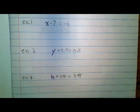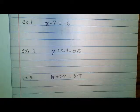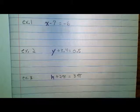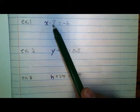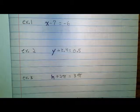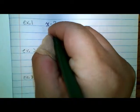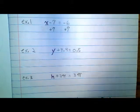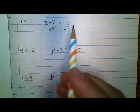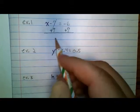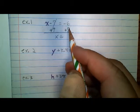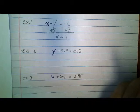Our first example: x minus 7 equals negative 6. I did x in a different color because I want it to stand out — we're solving for x, trying to get x by itself. The first thing to ask is: what is happening to the variable? We have x minus 7, so we recognize subtraction. The inverse of subtraction is addition, so we're going to add 7 to both sides. Negative 7 and positive 7 cancel out, and we're left with x equals negative 6 plus 7, which is positive 1. So x equals 1.